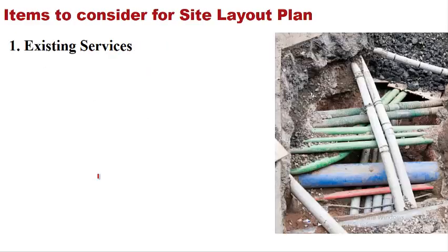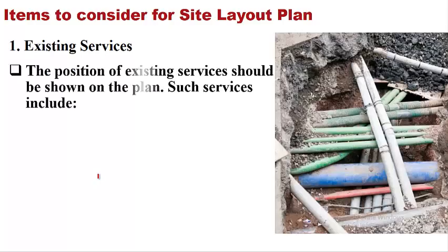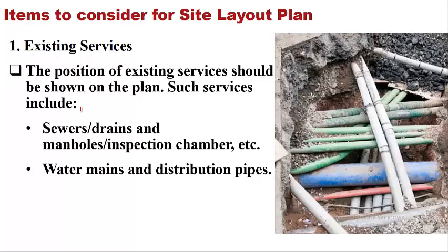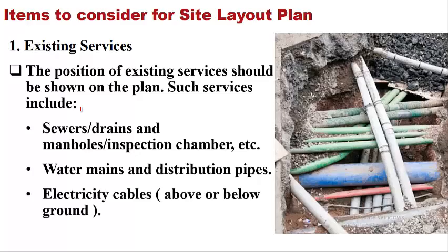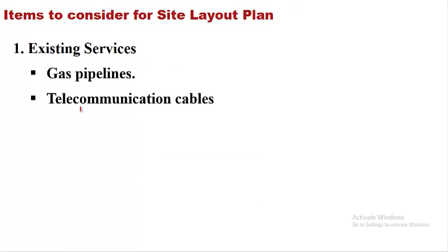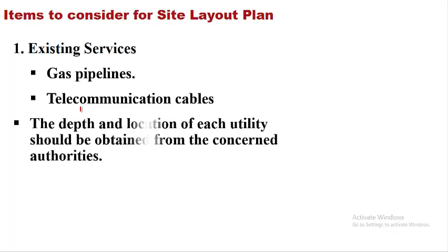Items to be considered by the planning officer: first is existing services. The position of existing services should be shown on the plan. Such services include sewers, drains, manholes, inspection chambers, water mains and distribution pipes, electricity cables above or below ground, gas pipelines, telecommunication cables. The depth and location of each utility should be obtained from the concerned authorities.